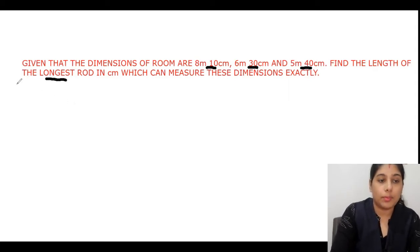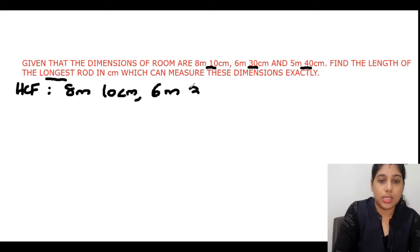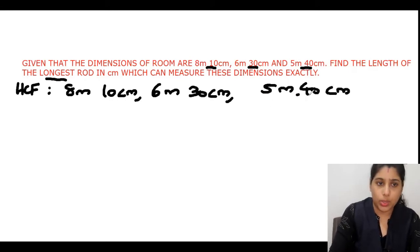So we have to find the HCF of 8 meter 10 centimeter, 6 meter 30 centimeter, and 5 meter 40 centimeter. As these three are in different units, we have to make them into the same unit. We can convert meters to centimeters. We know that 1 meter is 100 centimeters.